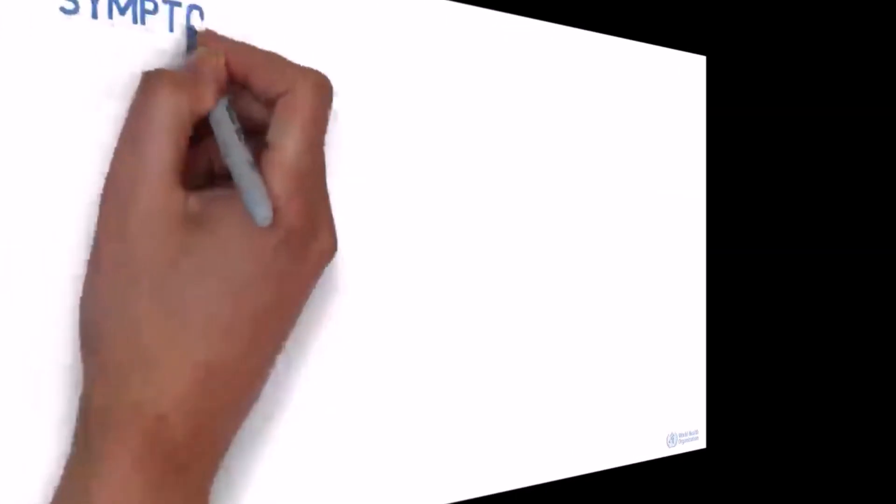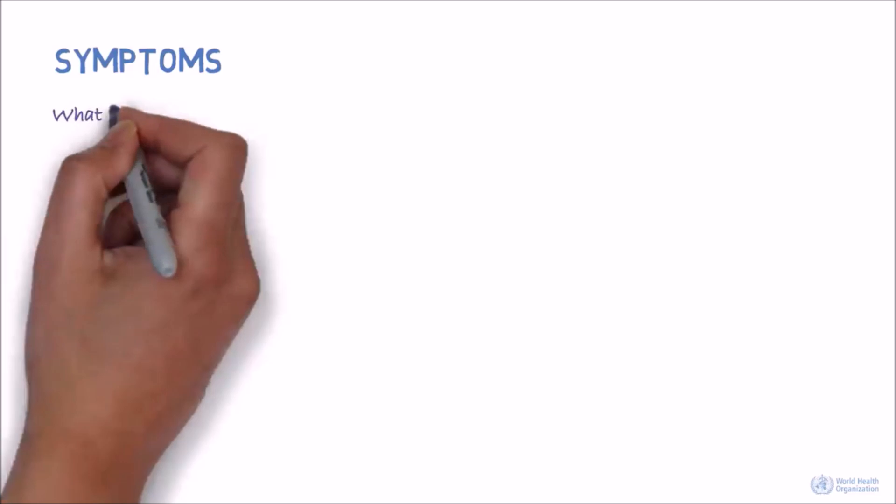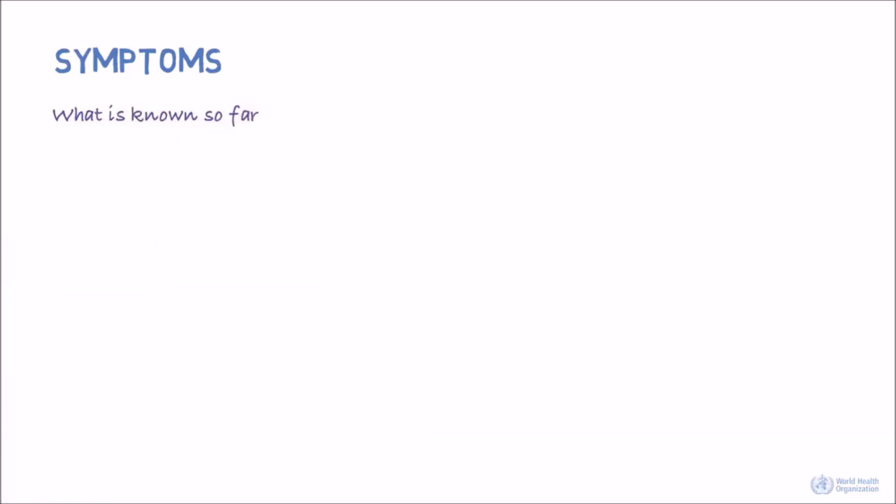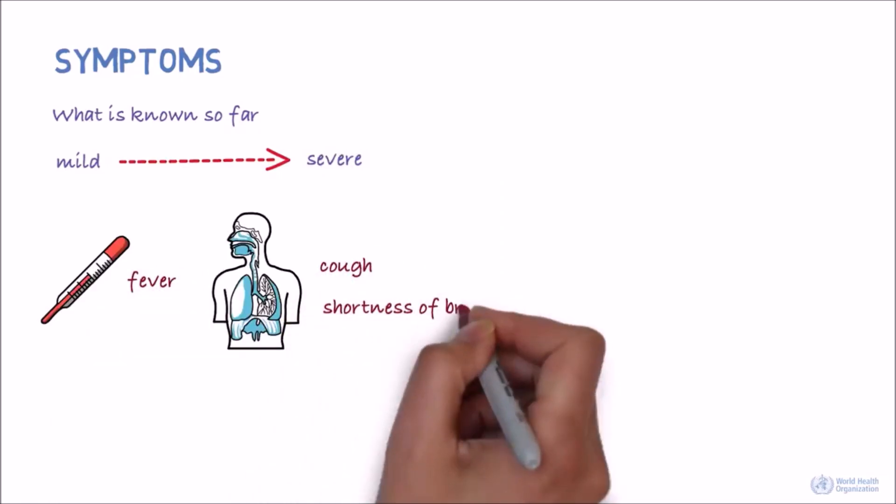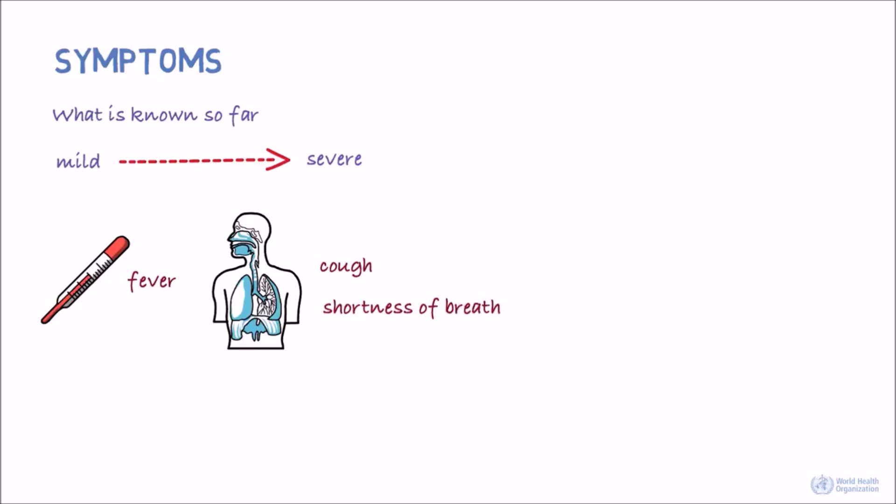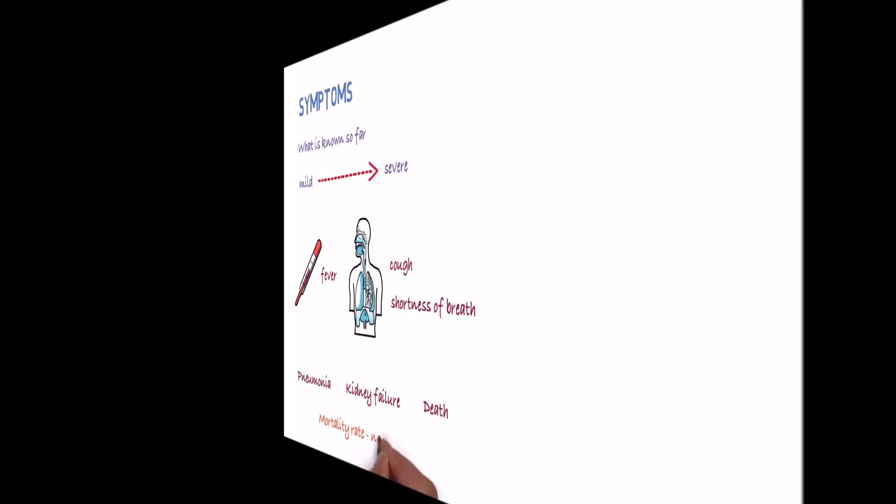How does the disease present? Well, from what is known so far, there can be a number of symptoms ranging from mild to severe. There can be fever and respiratory symptoms such as cough and shortness of breath. In more severe cases, there's been pneumonia, kidney failure and death. The mortality rate is not known yet.